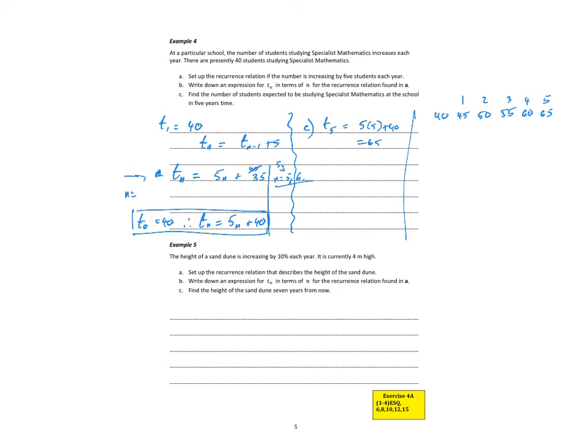The height of a sand dune is increasing by 10% each year. It is currently 4 metres high. So the recurrence relationship increases by 10%. The next value is equal to the previous value plus 10%. So you could put down Tn + 0.1 × Tn. So increasing by 10% means we multiply by 1.1. That's 11 tenths bigger. Write an expression for Tn. So again, I'm going to take T0 as equaling 4.